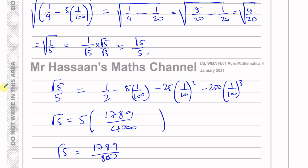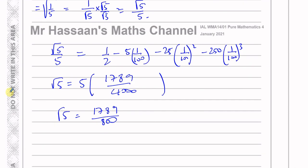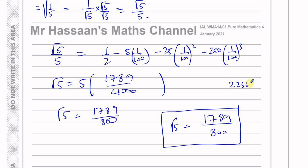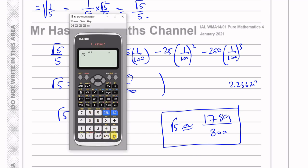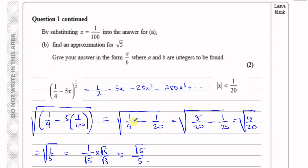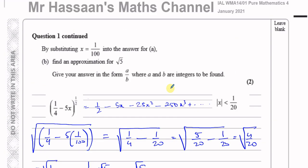So root 5 is approximately equal to 1789/800. To check: 1789 divided by 800 is 2.23625, and the actual square root of 5 is 2.236267, so they match to three decimal places. We can be pretty sure we haven't made any errors and will get those marks. There's the answer for question 1, parts A and B.